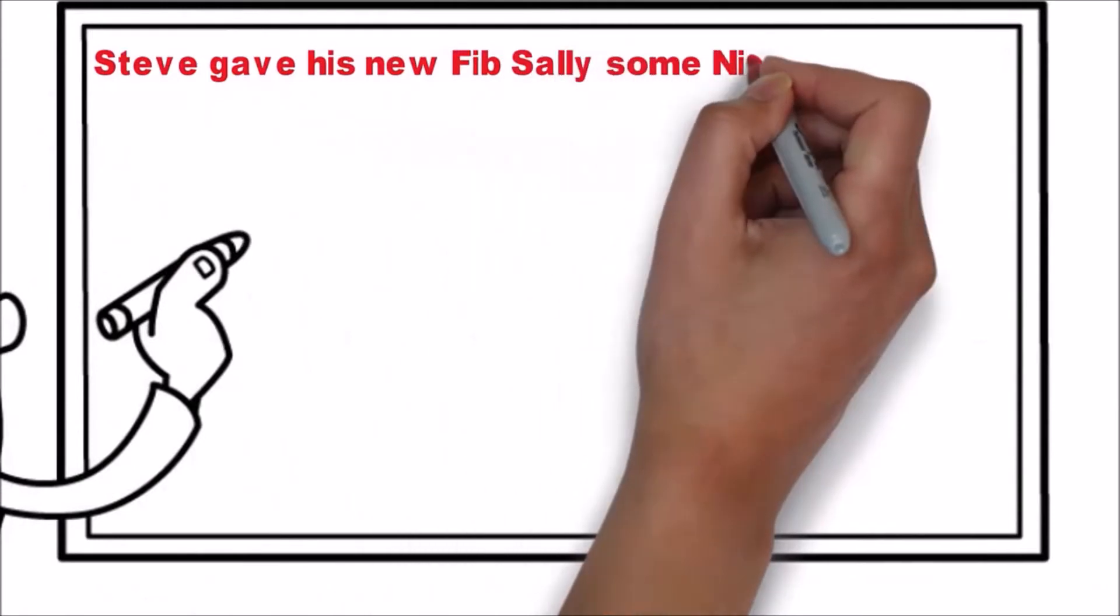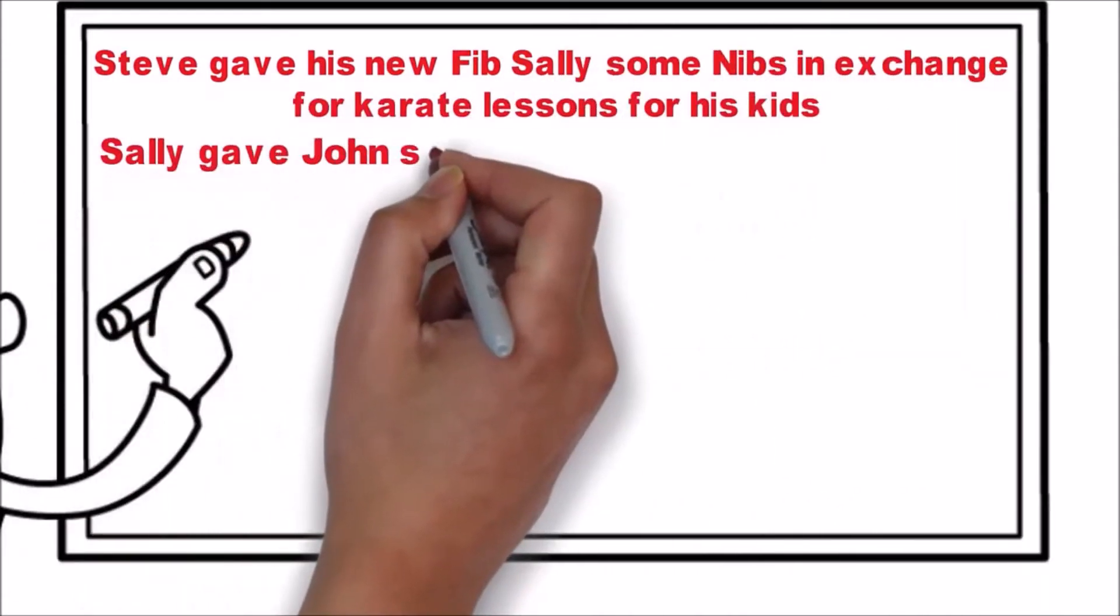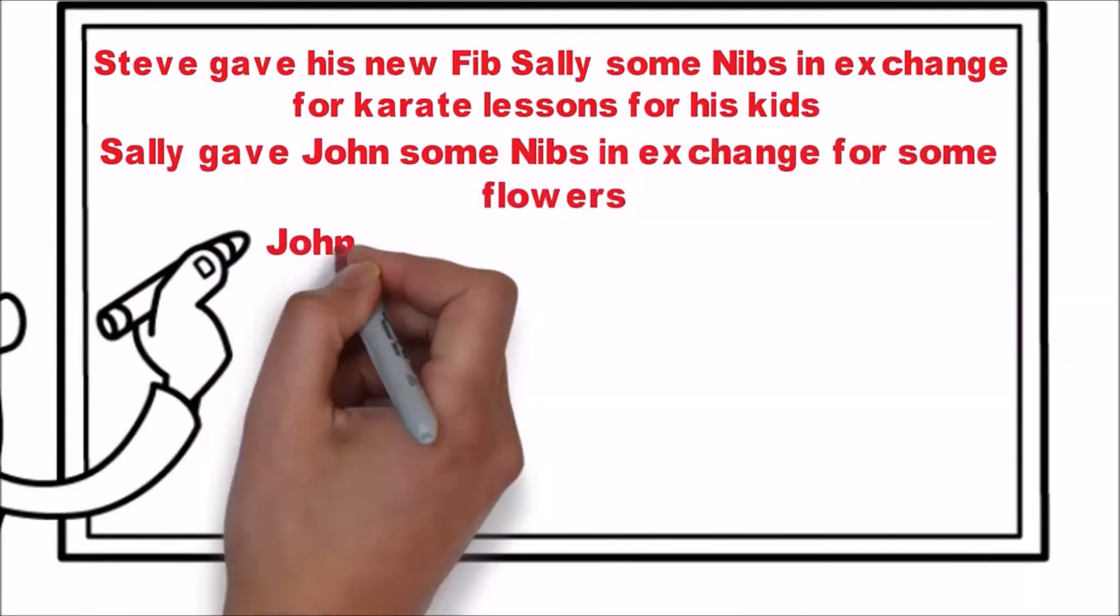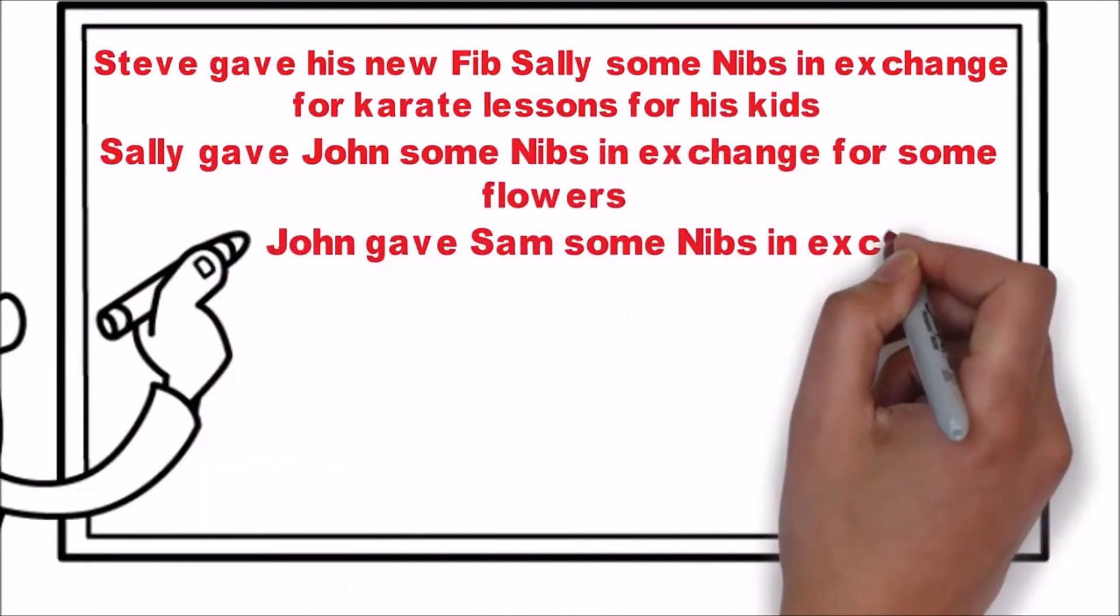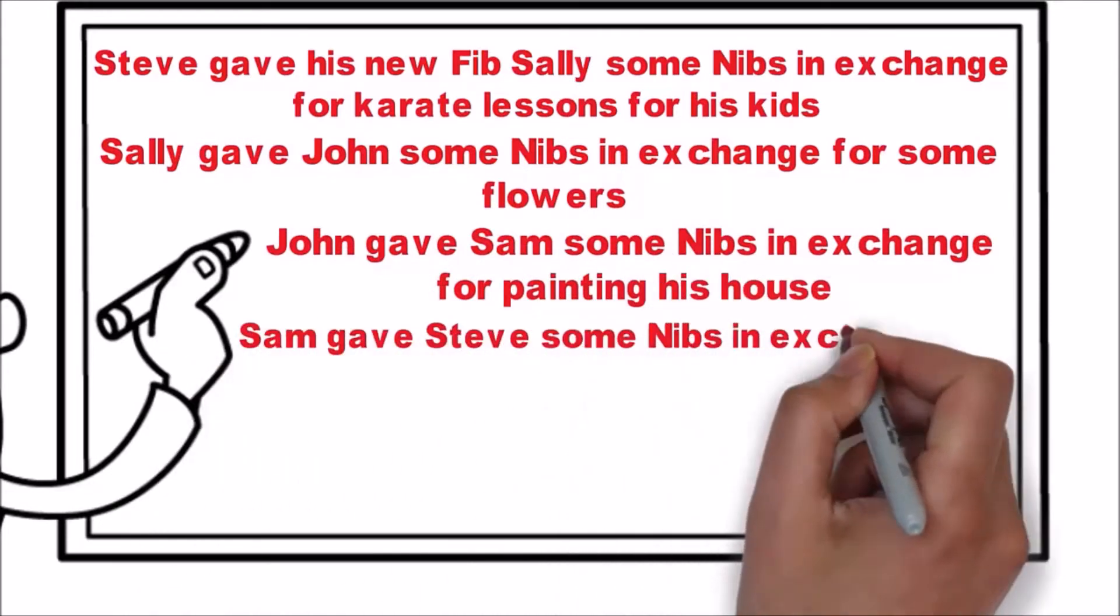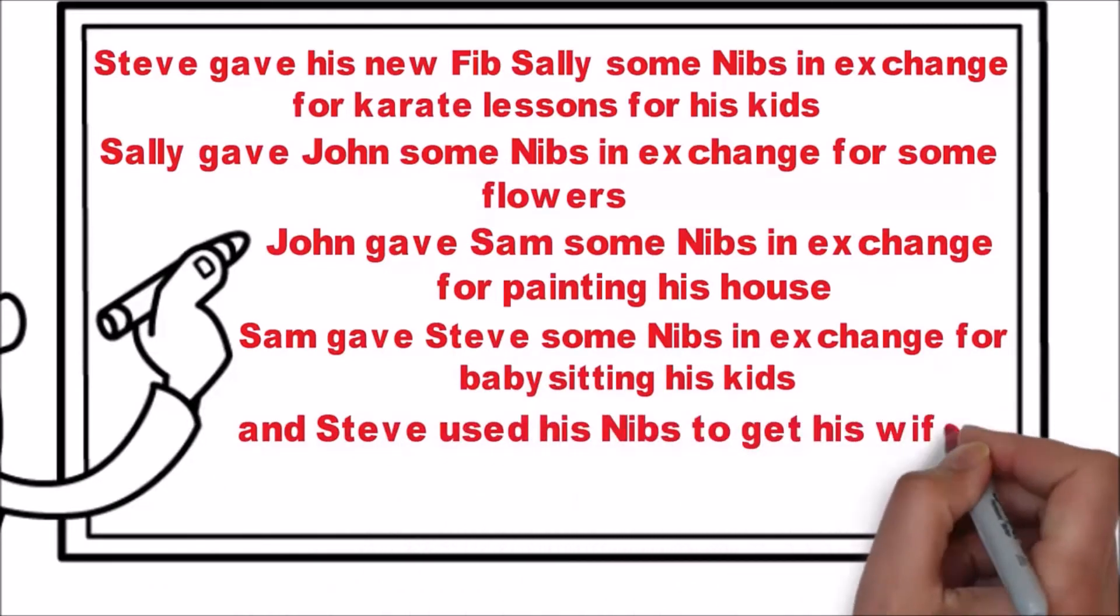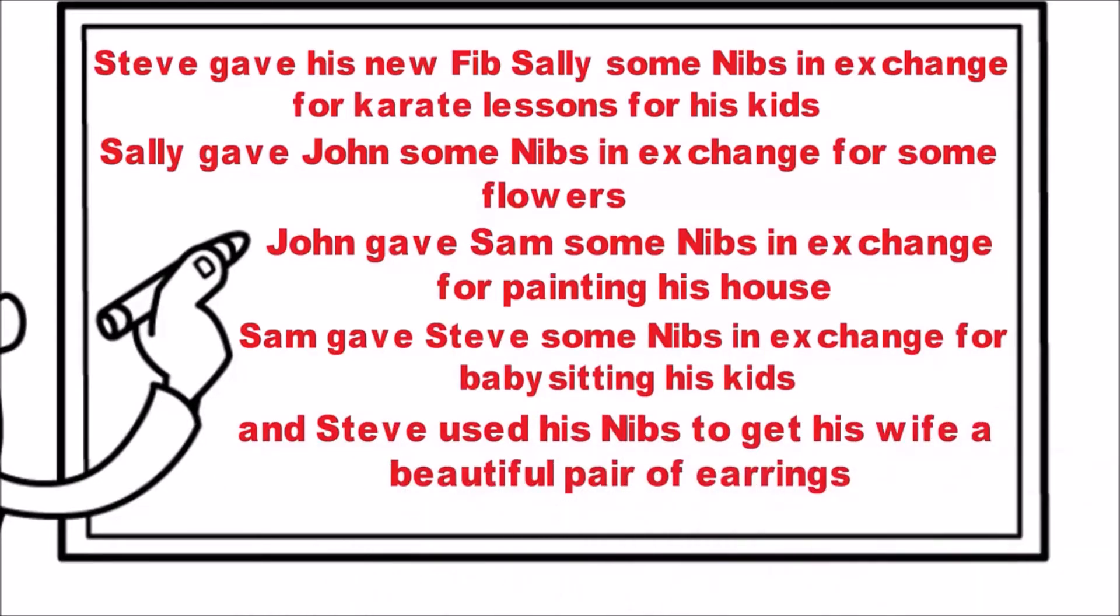Steve gave his new friend Sally some nibs in exchange for karate lessons for his kids. Sally gave John some nibs in exchange for some flowers. John gave Sam some nibs in exchange for painting his house. Sam gave Steve some nibs in exchange for babysitting his kids. And Steve used his nibs to get his wife a beautiful pair of earrings.